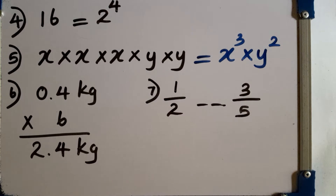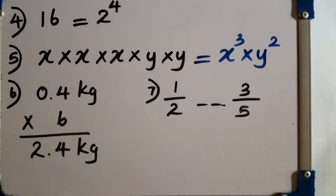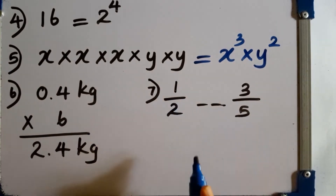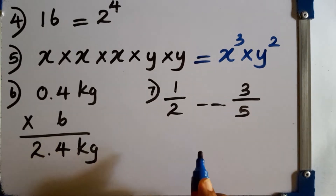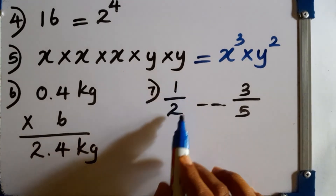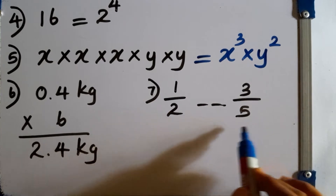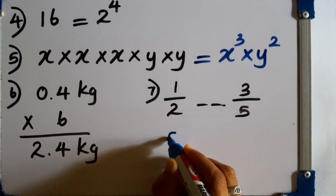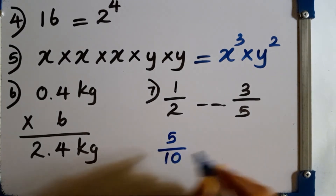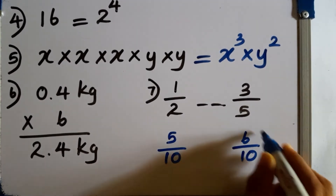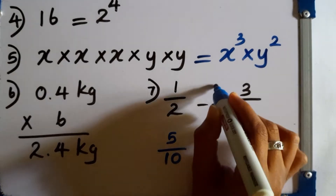Question number 7. Fill in the blanks using the symbols less than or greater than. The denominators are unlike, so first we have to make the two denominators equal. We can multiply the first fraction by 5 and the second one by 2. Then we obtain 5 over 10 here, and 6 over 10 here. The larger one is 6 over 10.